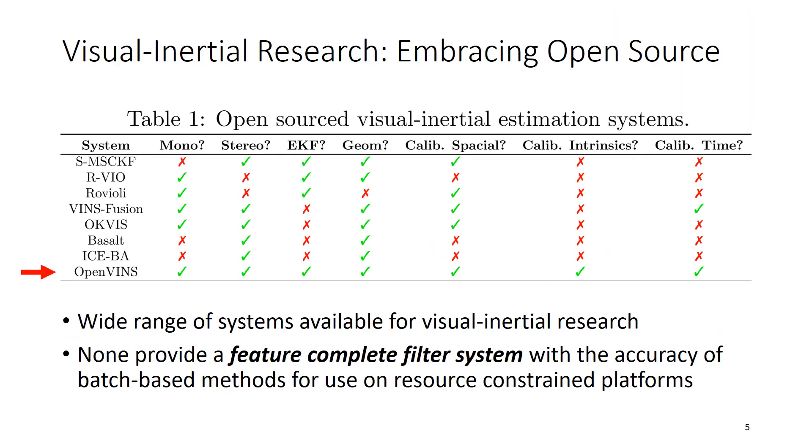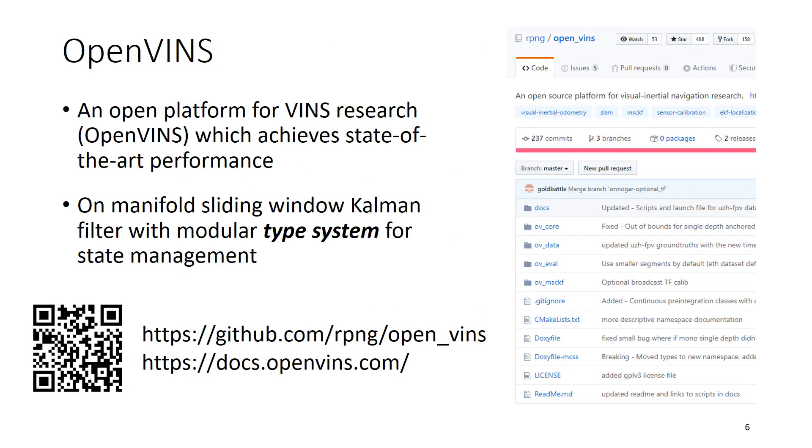When we looked at the existing visual inertial open source landscape, there's a wide range of great systems available to perform visual inertial research on top of. But none of these provided a feature complete filter system with the accuracy of the batch-based methods for use on resource constrained platforms. And so this is where the OpenVINS project comes in.